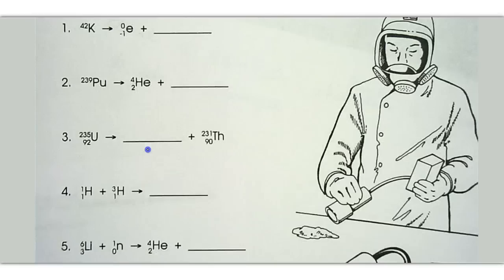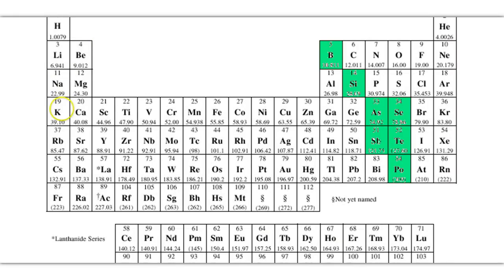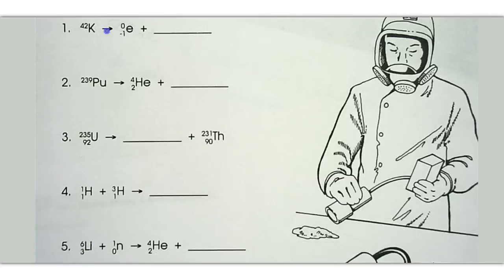Let's practice a few more. Number 1, we have 42 potassium or potassium 42. We need to know the atomic number of potassium. If we look here, potassium has an atomic number of 19. So we'll write 19.